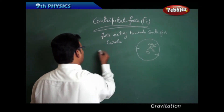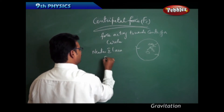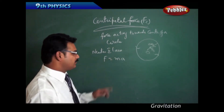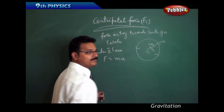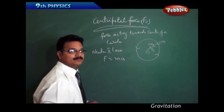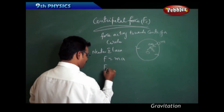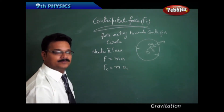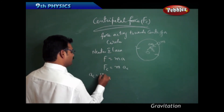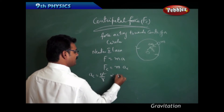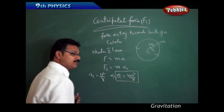Newton's second law says F equals M into A. Here we have a mass M rotating in a circular path with centripetal acceleration AC. The centripetal force FC is therefore FC equals M into AC. Since AC equals V squared by R, the centripetal force equals MV squared by R.